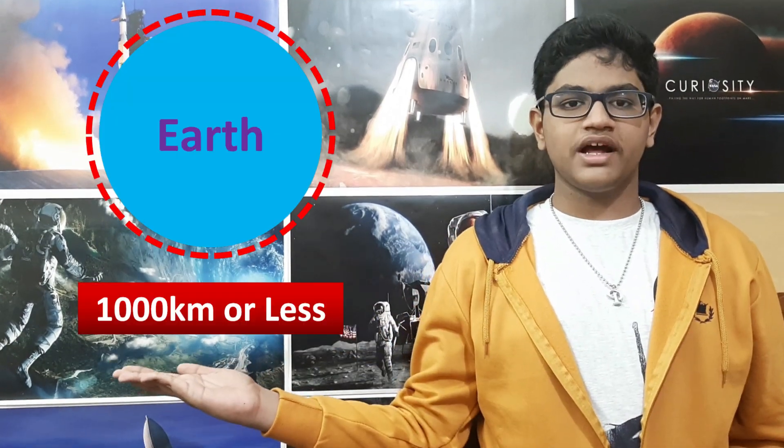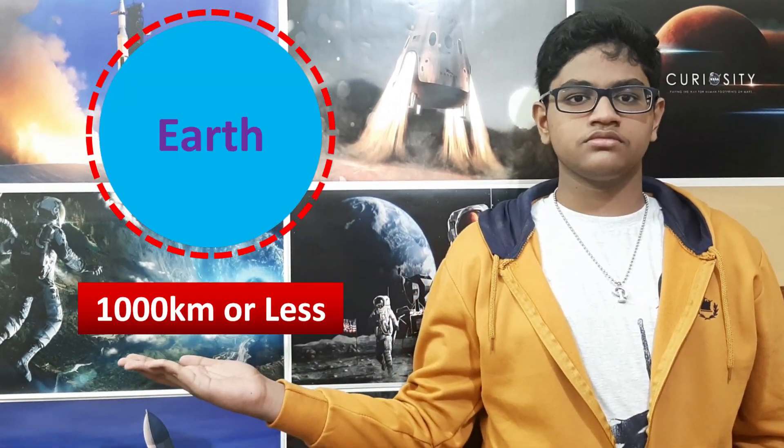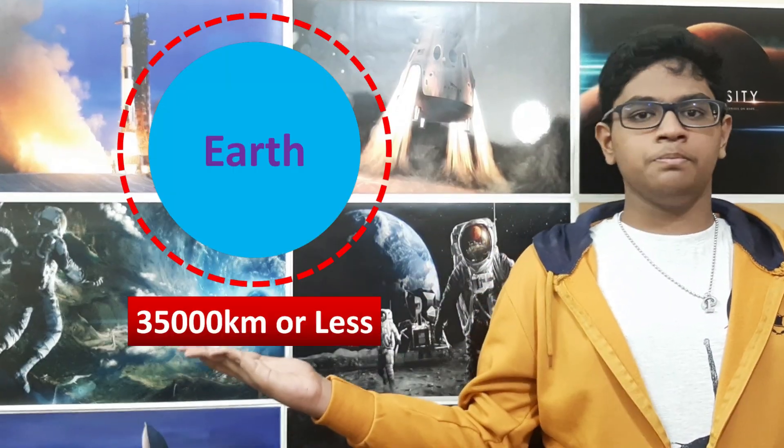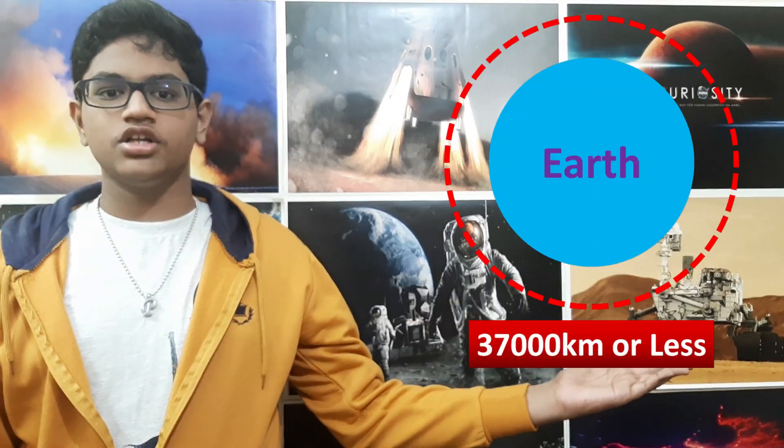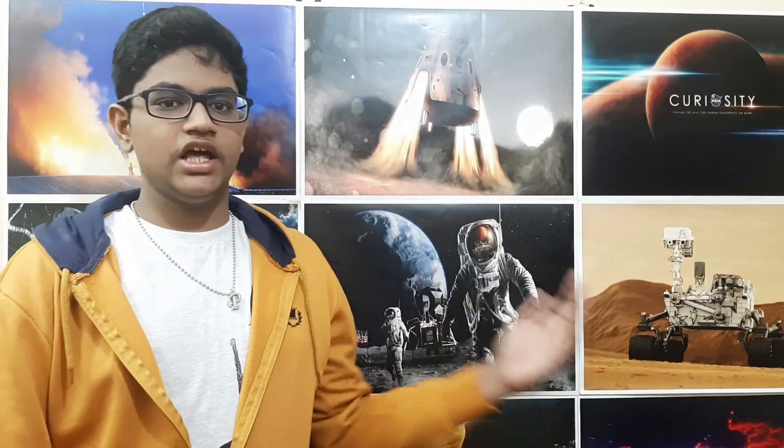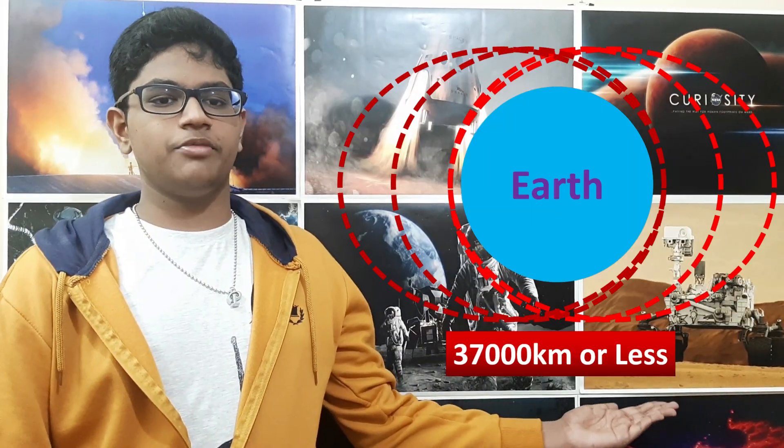Satellites can be classified into four main types: low-Earth orbit satellites, medium-Earth orbit satellites, geostationary Earth orbit satellites, and highly elliptical Earth orbit satellites. These are the four main types of satellites. Now let's start comparing.